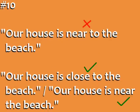Error number nine: 'Our house is near to the beach.' Near and 'close to' mean the same thing, but the word 'to' is never used after 'near.' The correct sentence is 'Our house is near the beach,' or 'Our house is close to the beach.'